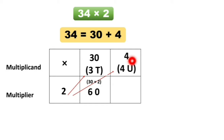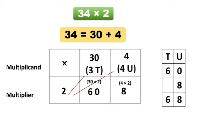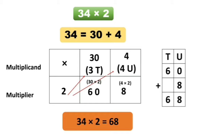Aani aata ya multiplier 2 nene aplella 4 la multiply karechai. So 2 × 4 za 8. Aata multiplication madhe aalella hai: 60 aani 8. So 60 plus 8 is equal to 68. So we got the answer — our answer is 34 multiplied by 2 is equal to 68.